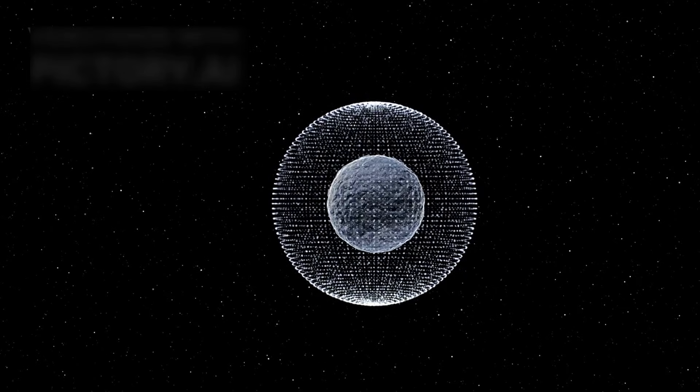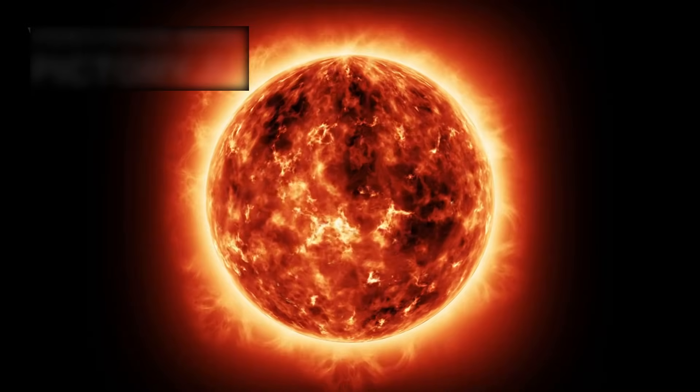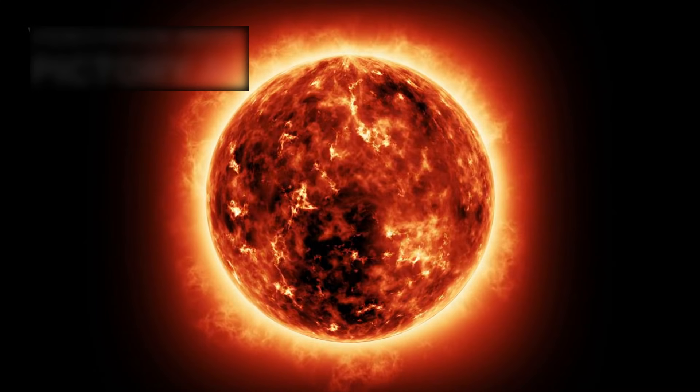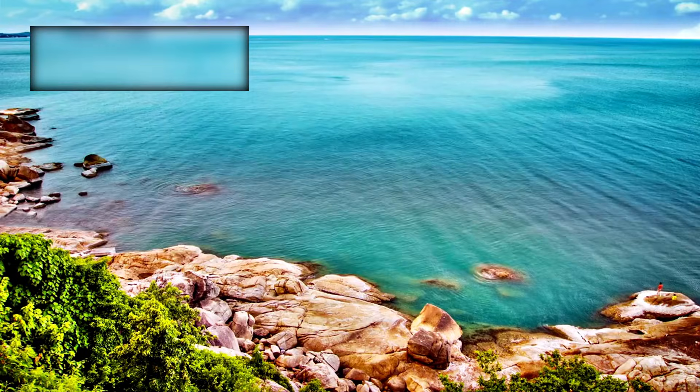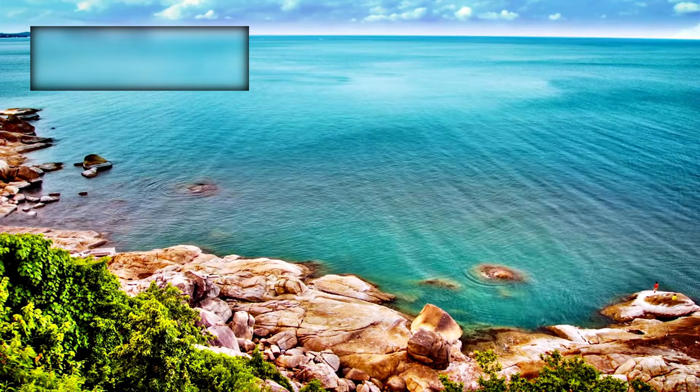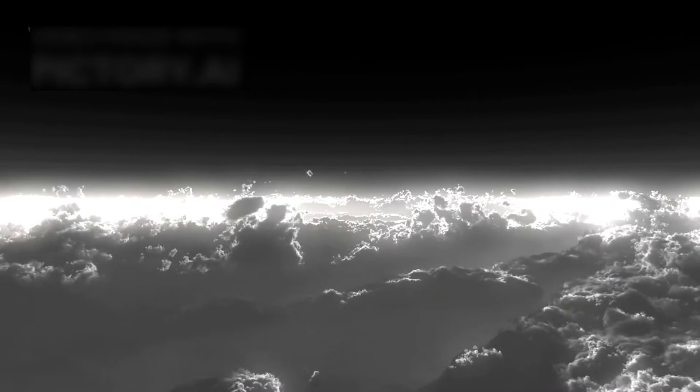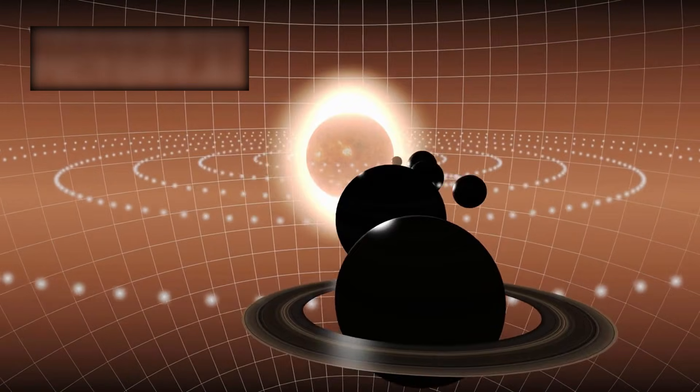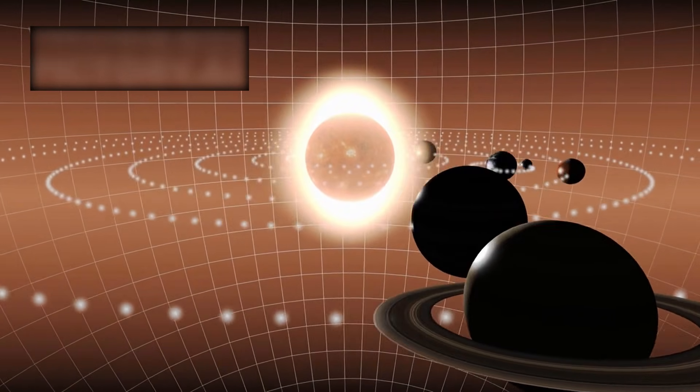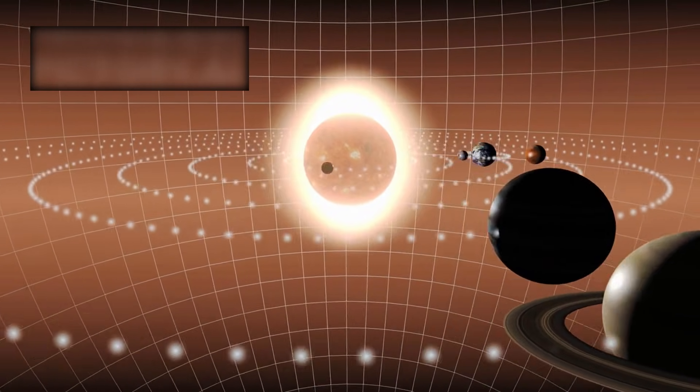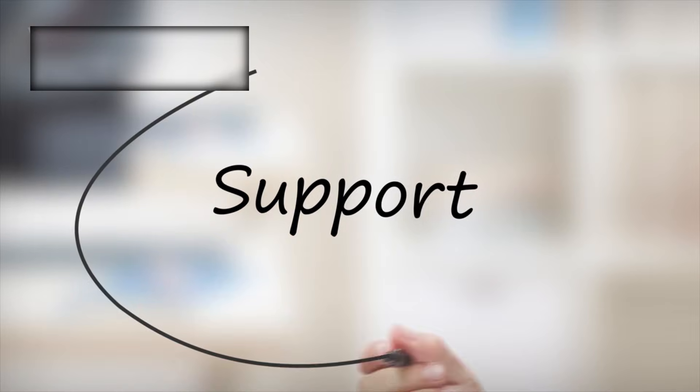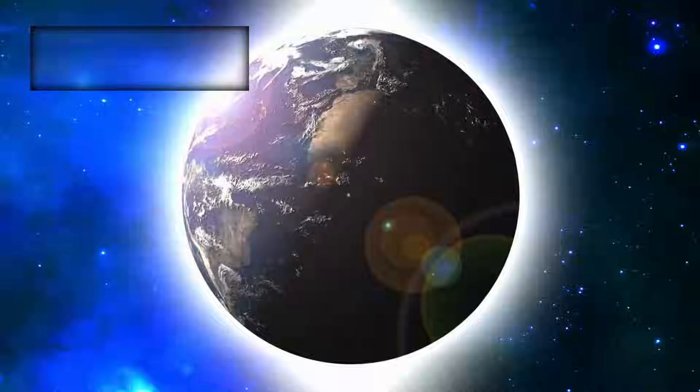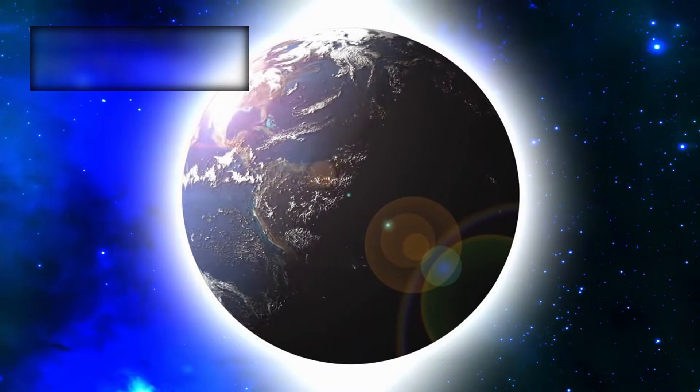Instead, they are worlds with deep, global oceans covered by dense hydrogen atmospheres. Oceans so vast, they could make up 90% of the planet's mass. The hydrogen atmosphere acts as a thermal blanket, trapping heat and allowing liquid water to exist even at orbital distances where Earth-like planets would be frozen solid. In short, Hycean planets are extreme, but their conditions may still support life. Life unlike anything on Earth, yet life nonetheless.